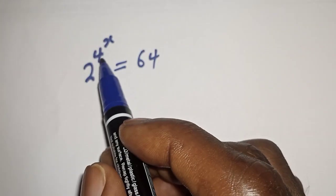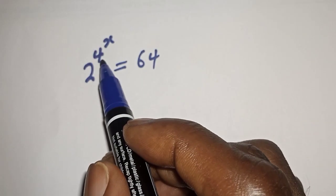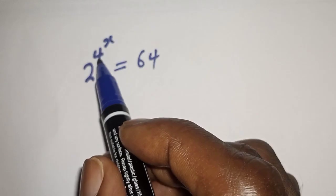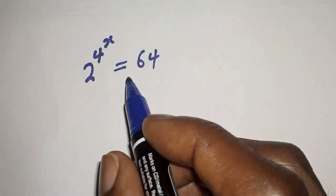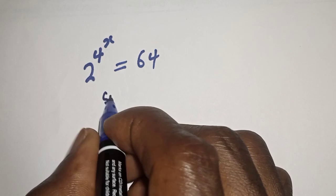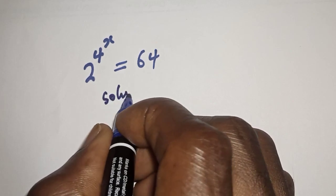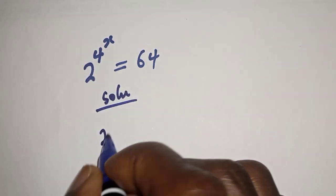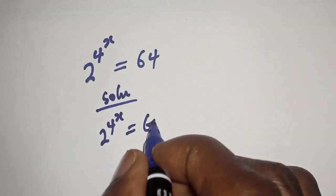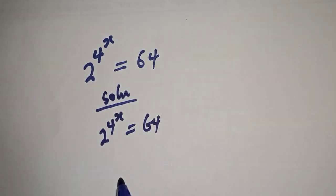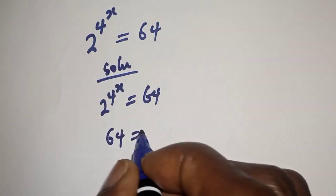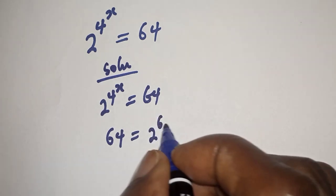Hello, welcome to Math. In this class we want to find the value of s from this equation: 2 raised to power 4 raised to power s is equal to 64. Like, share, comment, and subscribe. Solution: 2 raised to power 4 raised to power s is equal to 64. Then 64 is equal to 2 raised to power 6.